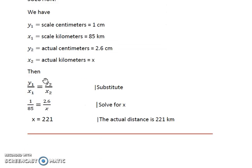Using the proportion for direct variation, we plug in the values we know for x1, y1, and y2, leave x2 as the unknown, and apply the proportion property to solve. Cross multiplying: x times 1 gives x, and 85 times 2.6 equals 221. So x equals 221, which is the actual distance between Tulsa and Fort Smith of 221 kilometers.